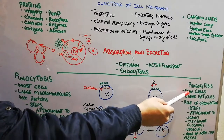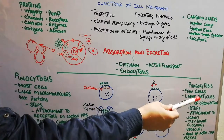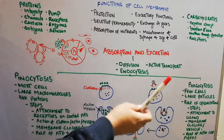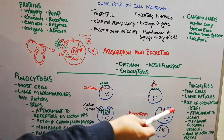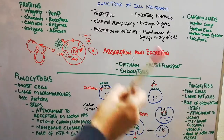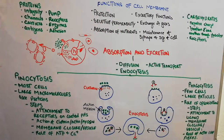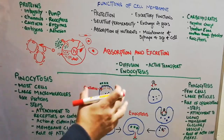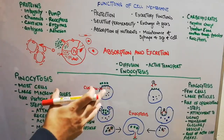So phagocytosis is practiced by few cells. They basically engulf large particles rather than protein molecules. There is absorption of large particles through a process called opsonization — in phagocytosis, large dead cells, bacteria, or viruses are taken in.